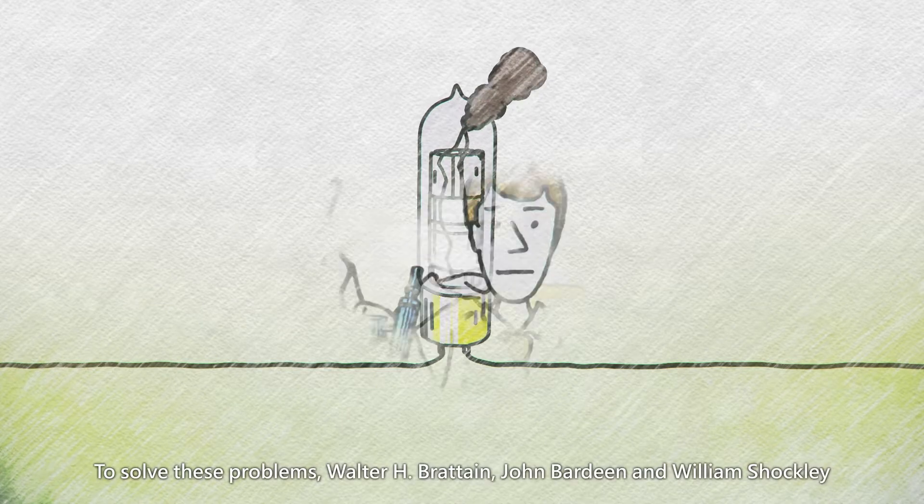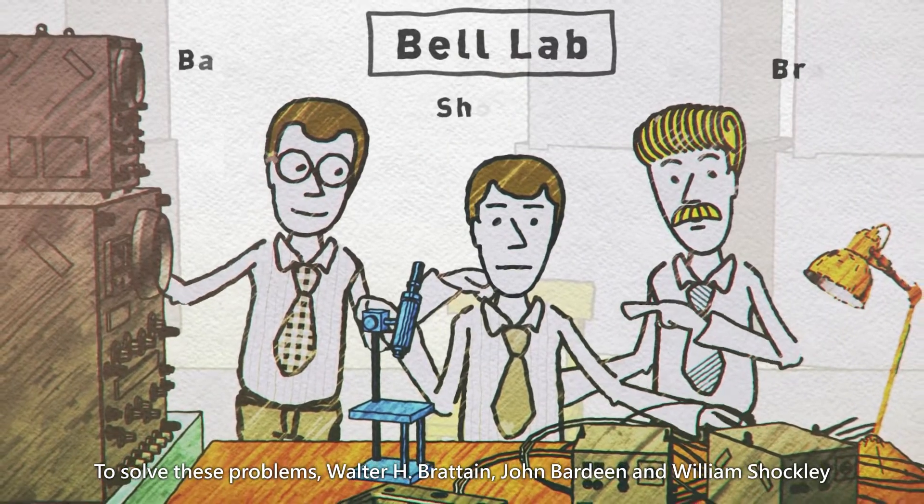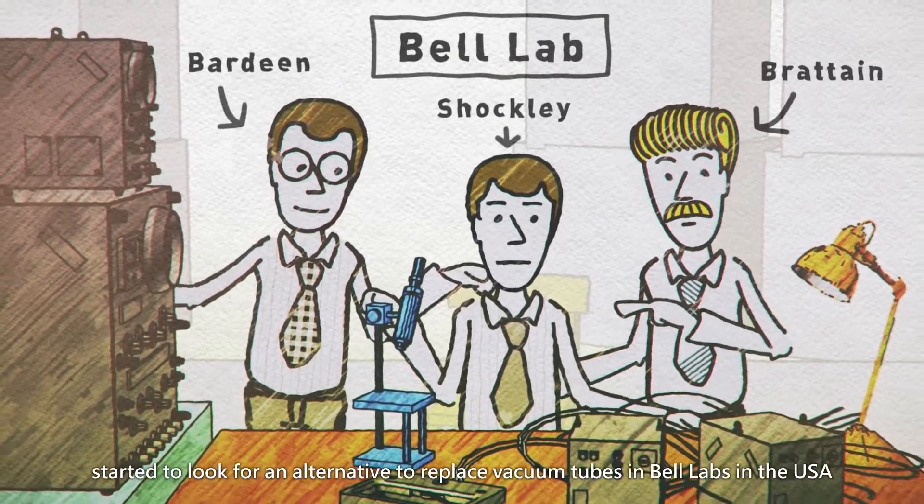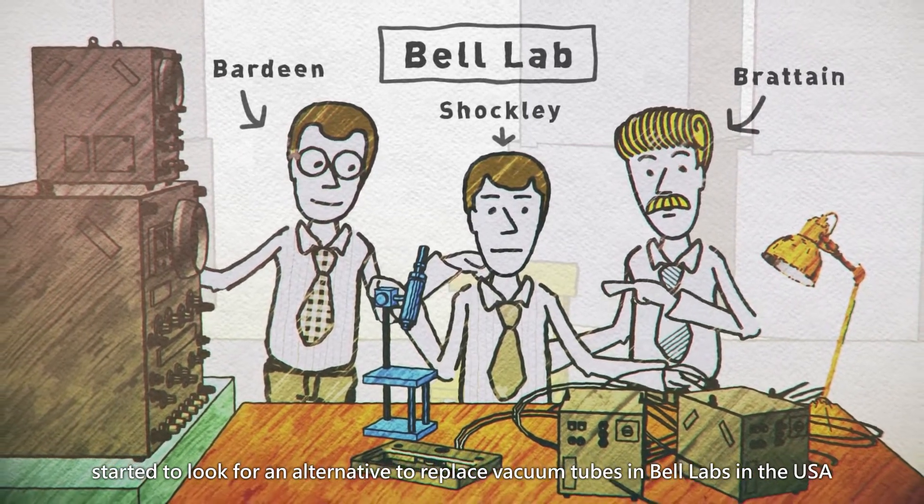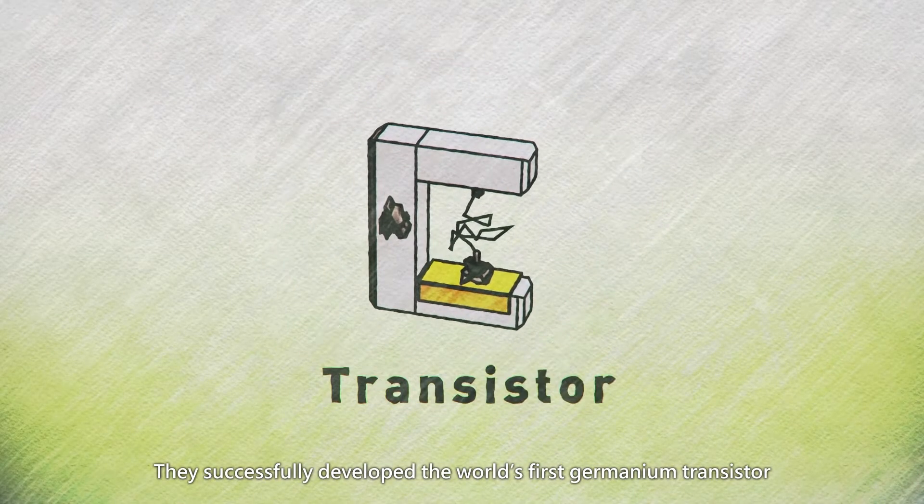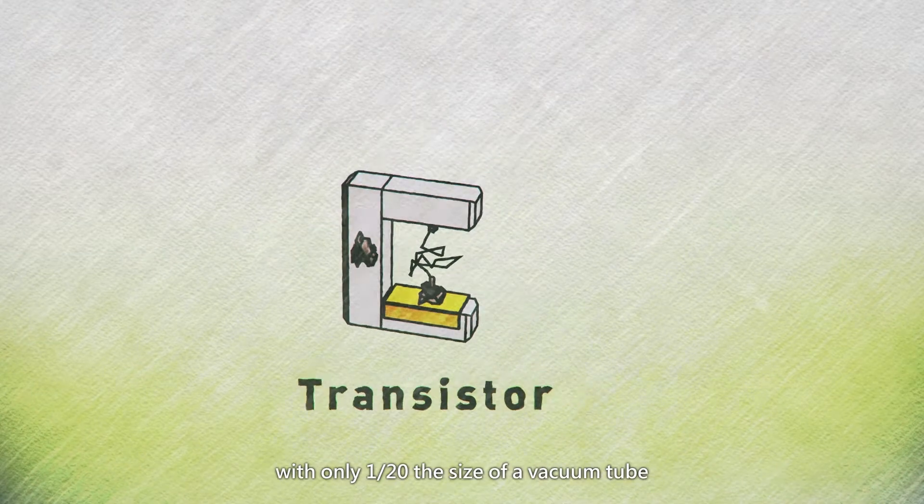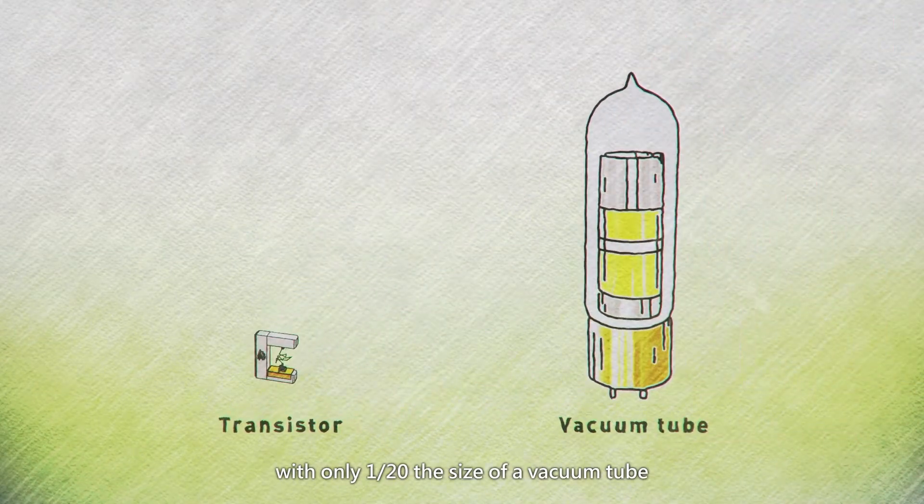To solve these problems, Walter H. Bratton, John Bardeen, and William Shockley started to look for an alternative to replace vacuum tubes in Bell Labs in the USA. In 1948, they successfully developed the world's first germanium transistor, with only 1/20th the size of a vacuum tube.